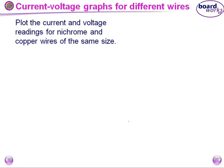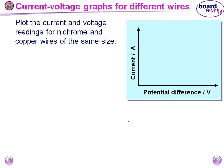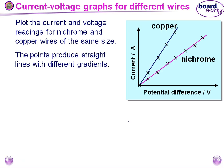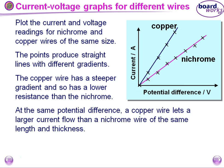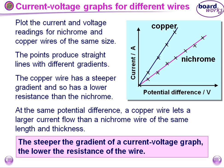Now you have to plot the current-voltage graph for nickel and copper wire. Using the same x-axis, we get the values. One line is for nickel and another is for copper. Steeper the gradient of the current-voltage graph, the lower the resistance of the wire, since we take the reciprocal of the slope.